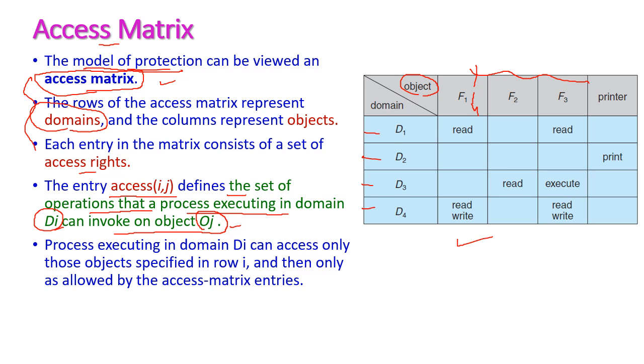For example, suppose I am going to access domain 1. Domain 1 can access file 1 and file 3, and can perform only read operations on file 1 and file 3.